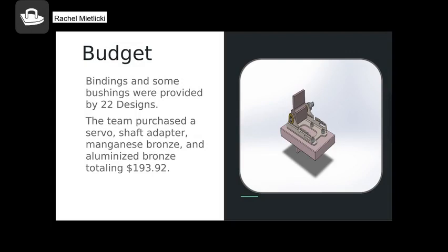The main budget for this testing was provided through the 401 class, although 22 Designs provided materials. They provided us with the binding housings as well as the bushings and some technical drawings of their other components. And so then we also had to purchase, using the 401 budget, we had to purchase some more bushings and some metal stock, as well as a servo motor and couplers. The power supply and Arduino were supplied by team members, and the entire budget that was used from the MEAE 401 class was $193.92.